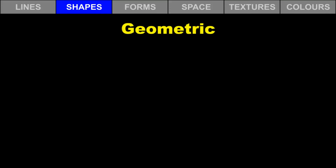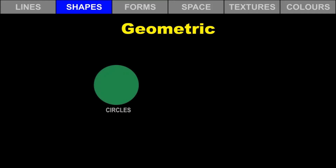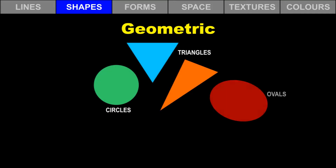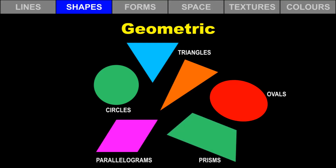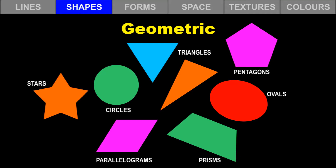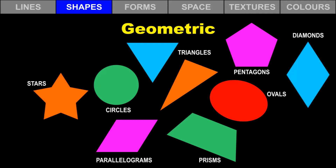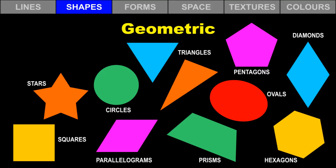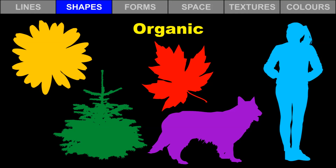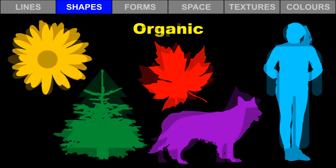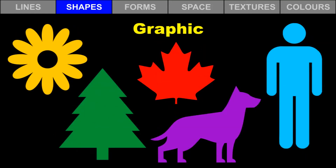Shapes are two-dimensional and flat. Some shapes are geometric and mathematical. There are circles, triangles, ovals, and parallelograms. There are prisms, pentagons, star shapes, and diamonds. There are squares, hexagons, rectangles, and much more. Organic shapes are natural. Graphic shapes are designed by artists and are simplified pictures.